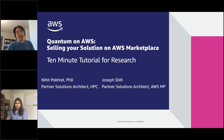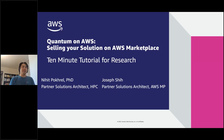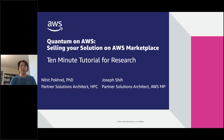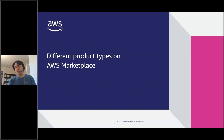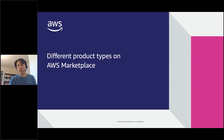Thank you, Nahid. AWS Marketplace is a curated digital catalog for third-party software where you can find, buy, deploy, and manage third-party software, data products, as well as services to build your businesses on. We're going to talk about how you as a seller of quantum algorithms can sell your products on Marketplace. Marketplace has different product types, and those dictate how you would package your product.